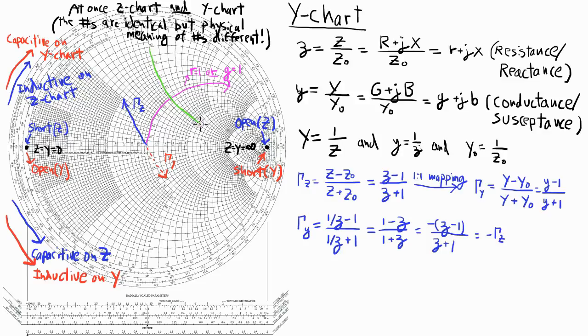This is a constant x circle on the z chart and a constant b circle on the y chart, where x is equal to one or b is equal to one. This one is x equals minus two on the z chart, and b is equal to minus two on the y chart.